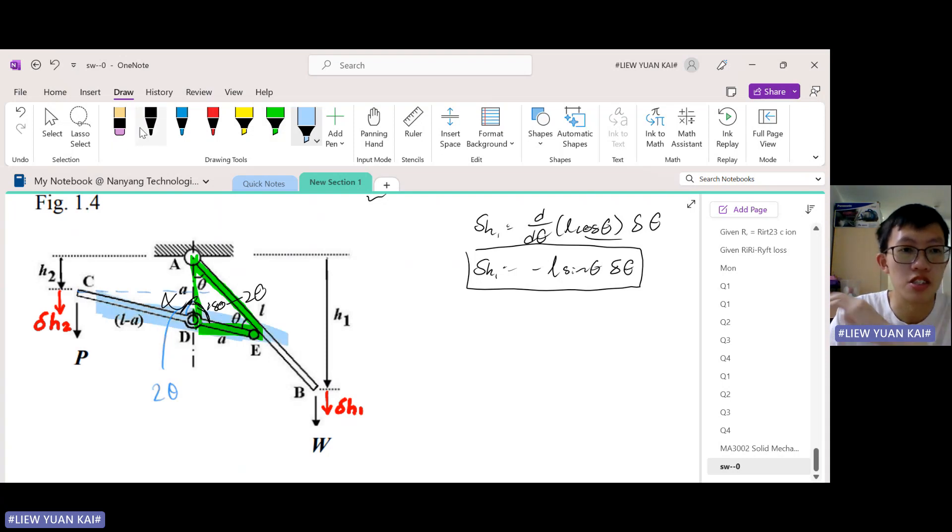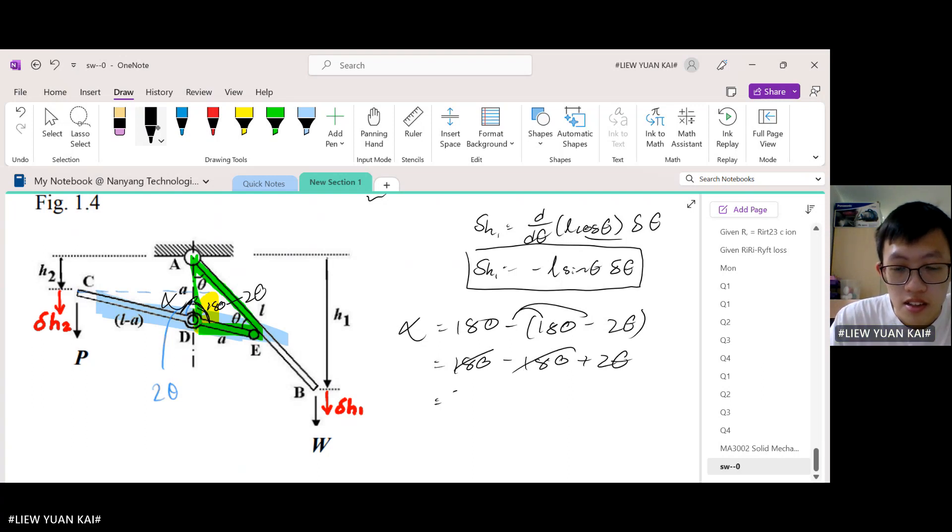Now how to find this angle here—let's call this alpha. Notice that they all fall on this straight rigid bar, and we know that for a straight line the total angle is 180 degrees. So to find alpha, we take 180 minus away that remaining angle, so minus (180 minus 2 theta). You expand this, and these will cancel away, so we know that this is 2 theta.